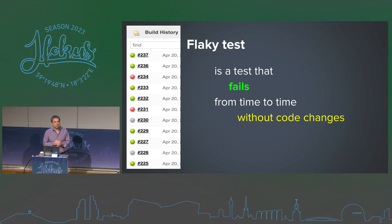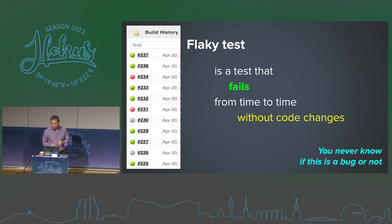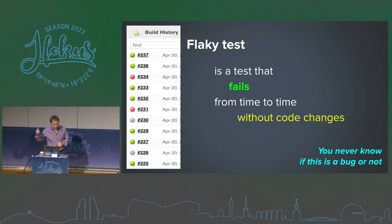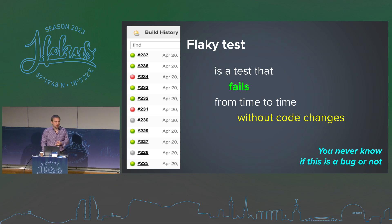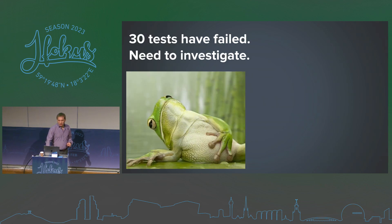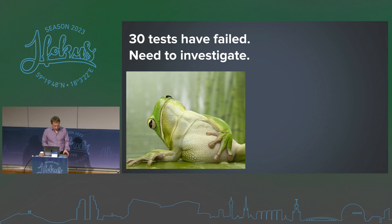The fact is that everybody has flaky tests. You never know when the build fails whether it's a real bug or not — that's the biggest problem, because you lose trust for automated tests.